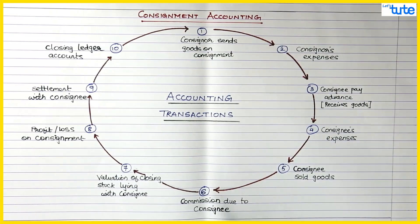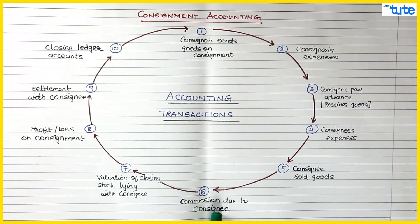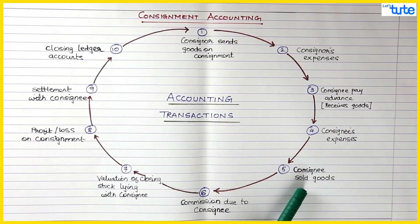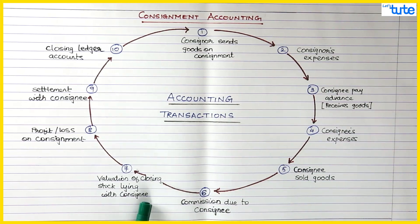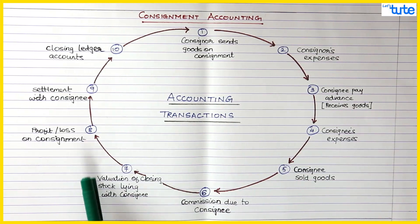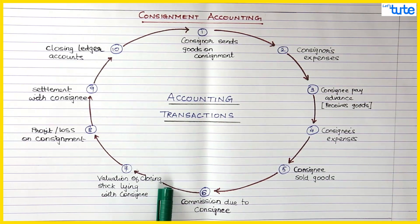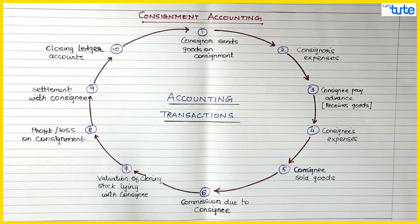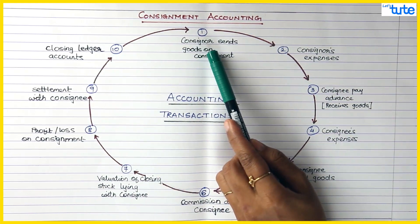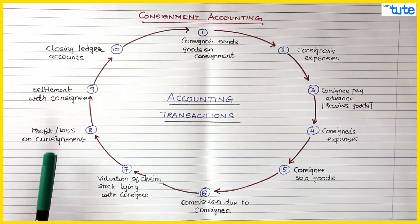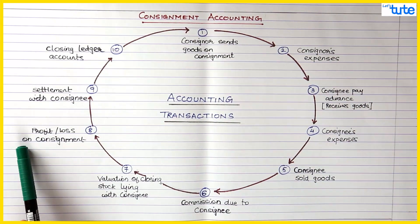I have written 'commission due' and not 'commission paid' because it is due and settled all together. After commission is due, at the period end or year end, there might be some stock lying with the consignee. So we will have to value the closing stock and pass the entry for it. This stock still belongs to the consigner because ownership remains with the consigner, but physically it is with the consignee.